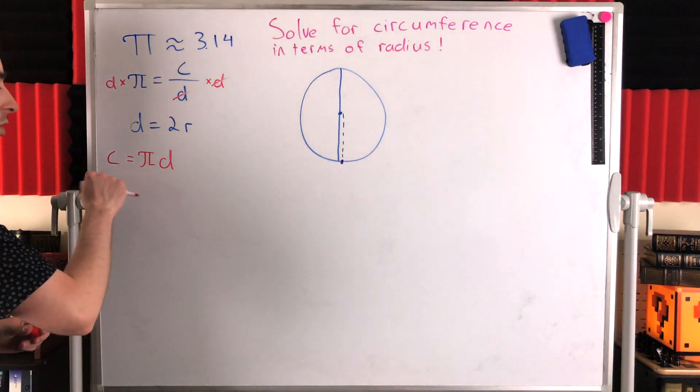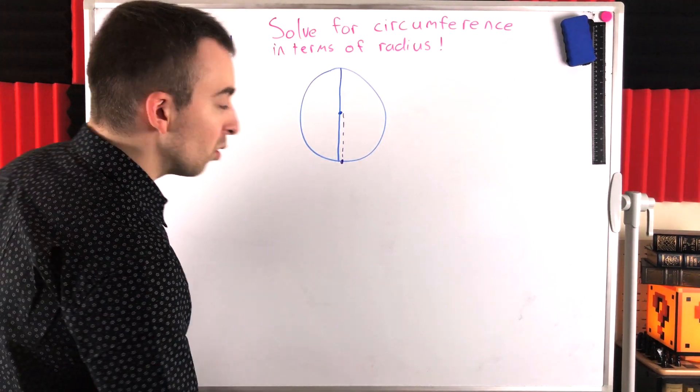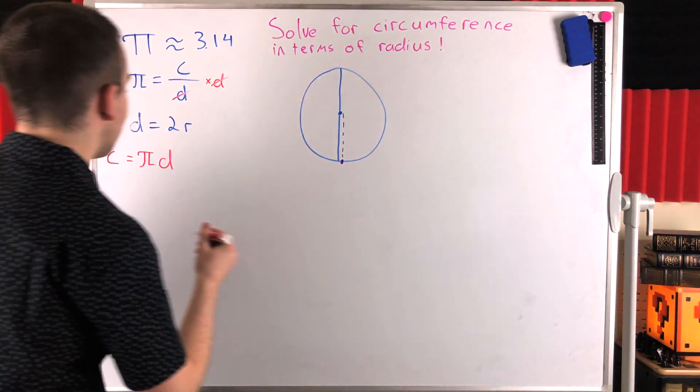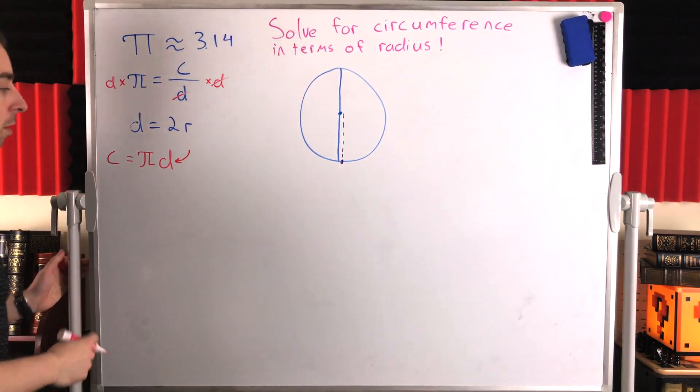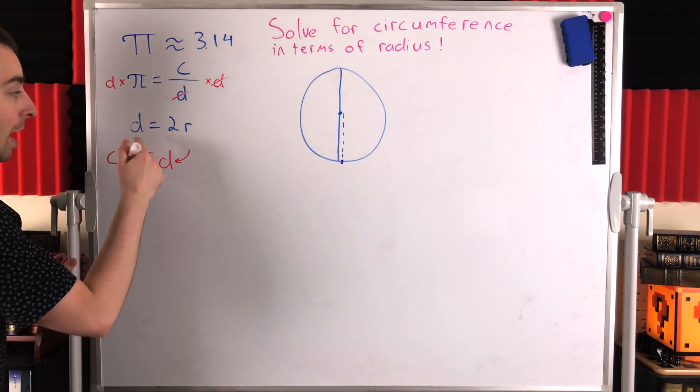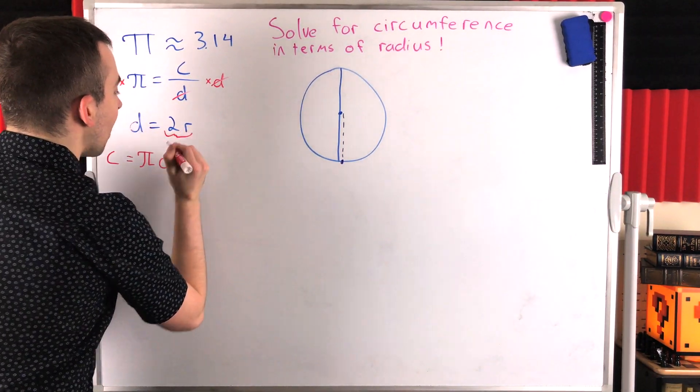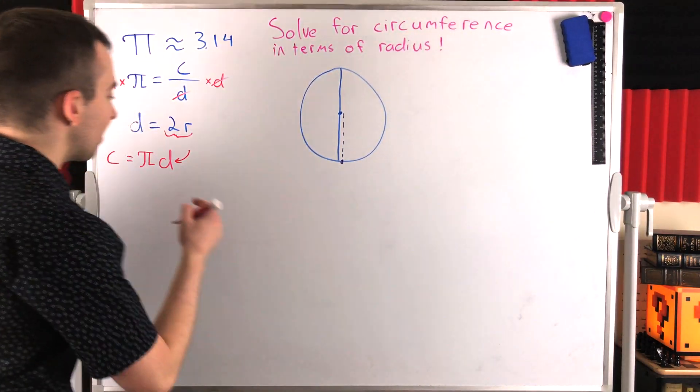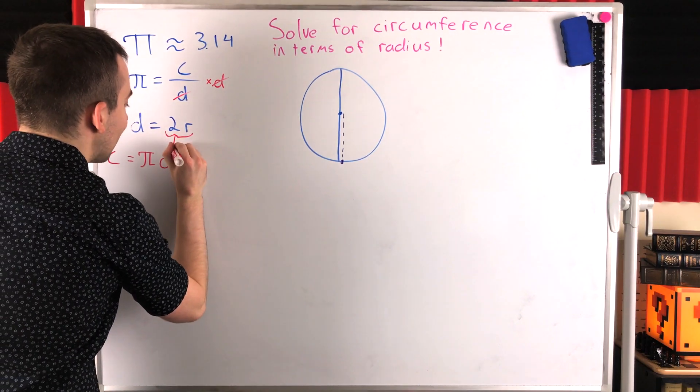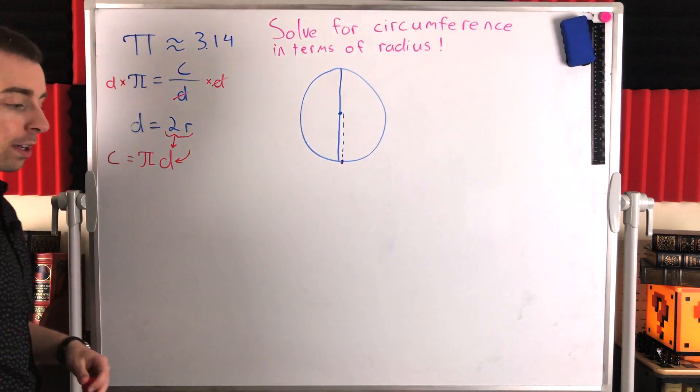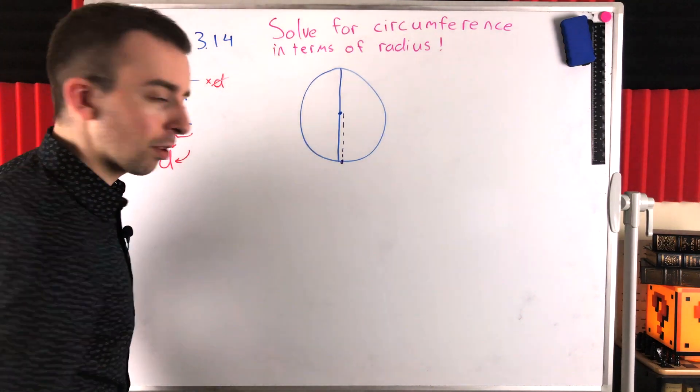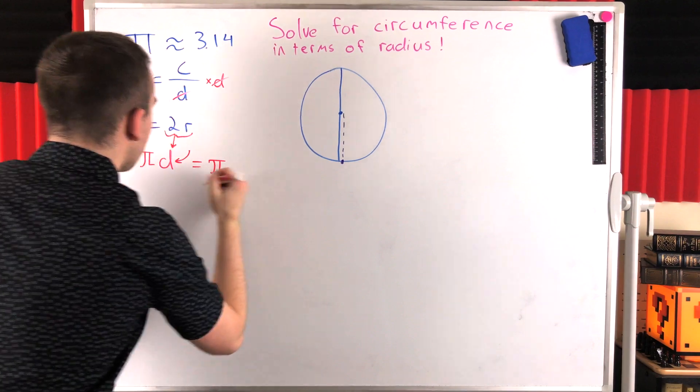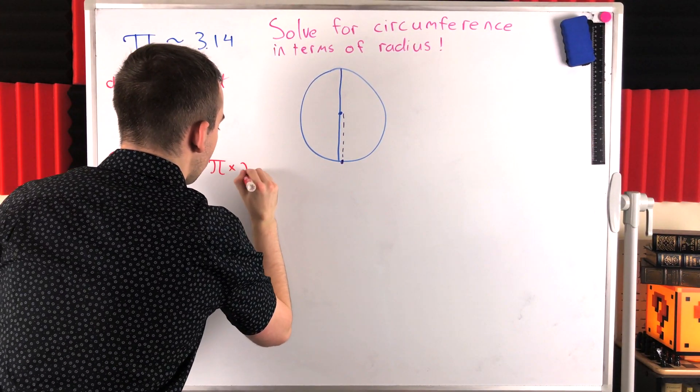Now we want to solve for circumference in terms of the radius. So we want to get our radius involved in here somehow. We can do that with basic substitution. Because of course, the diameter of a circle is very related to the radius. The diameter is equal to two times the radius. So all we have to do to write this equation in terms of the radius is to plug this two times the radius in for our diameter. Because that's what diameter is equal to. It's just two times the radius. So that works out just fine.